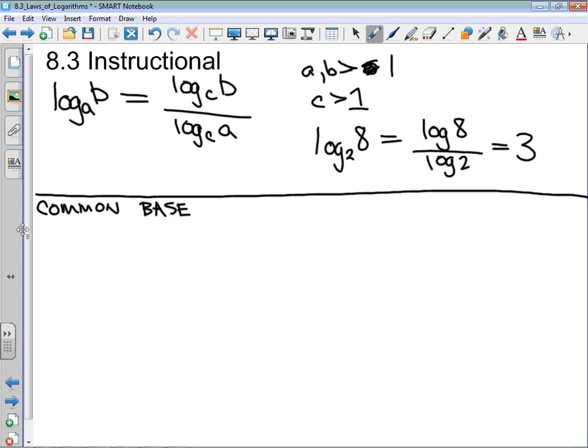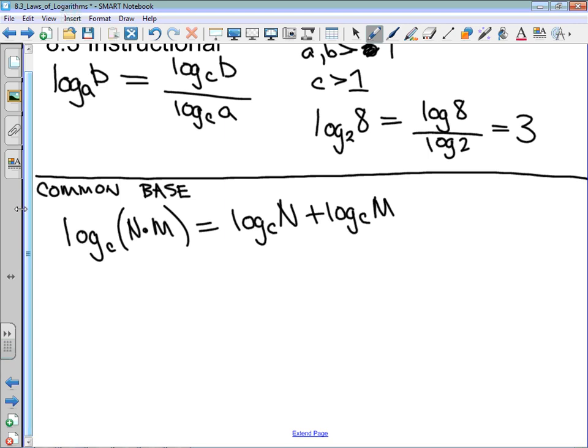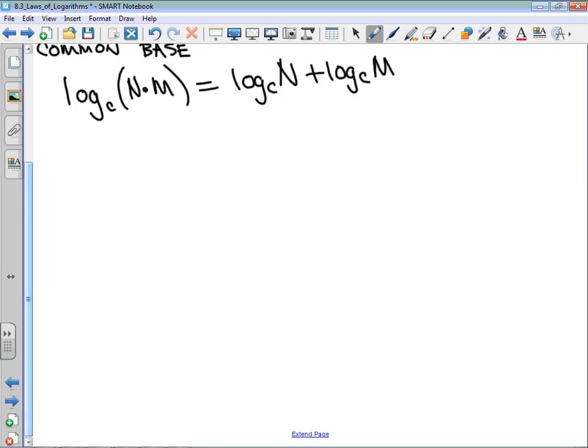So if we were to have, and this is typically called the product log law, let's say we had log base c of n times m. This can be written as log base c of n plus log base c of m. Now, why that is so useful is it allows us to write the multiplication of the arguments as the addition of two different logarithms. I'm going to give examples of these.